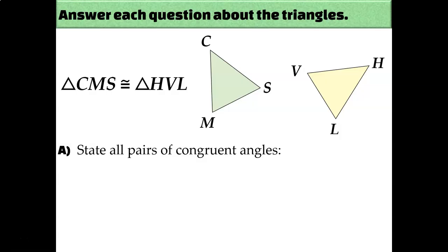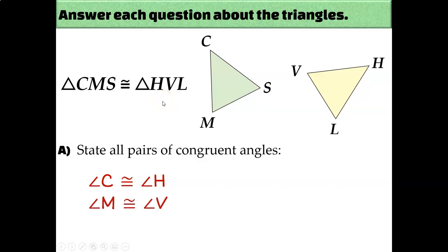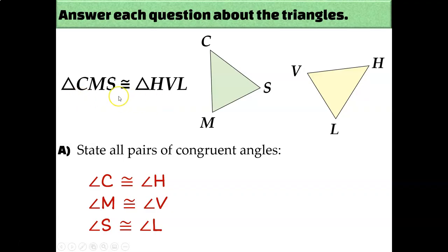In our next example, we have an unlabeled diagram, but we're told that triangle CMS is congruent to triangle HVL — we're given a congruence statement. Since C and H are the first letters in each triangle's name, I can conclude that angle C must be congruent to angle H. M and V are in the middle, so angle M is congruent to angle V. And angle S is congruent to angle L, because those are the last letters in each triangle's name. For this whole process, I didn't look at the diagram once — since it's unlabeled and not necessarily drawn to scale, the congruence statement is your source of information.